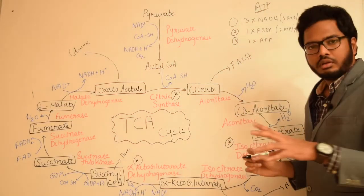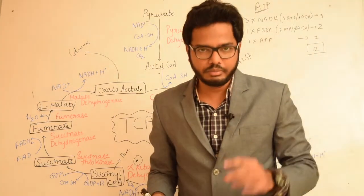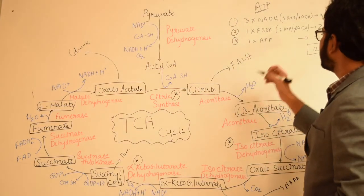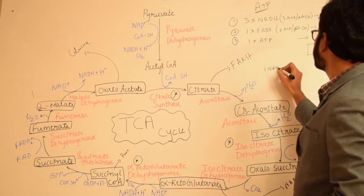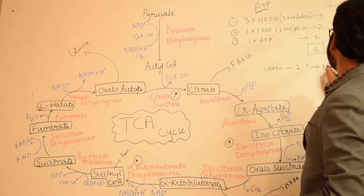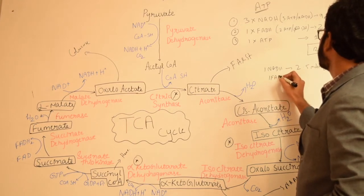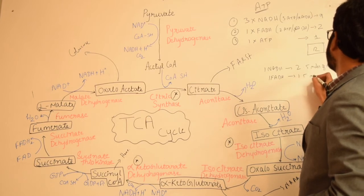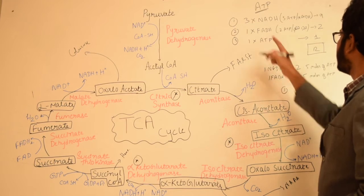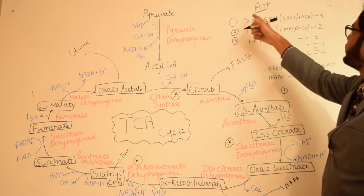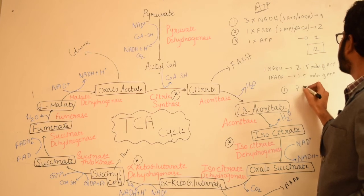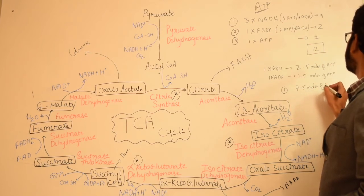If the question pertains to the number of moles of ATP being generated, remember that one NADH contributes to 2.5 moles of ATP, whereas one FADH₂ contributes to 1.5 moles of ATP. In the citric acid cycle, we have three NADH, so three multiplied by 2.5 gives 7.5 moles of ATP from NADH.